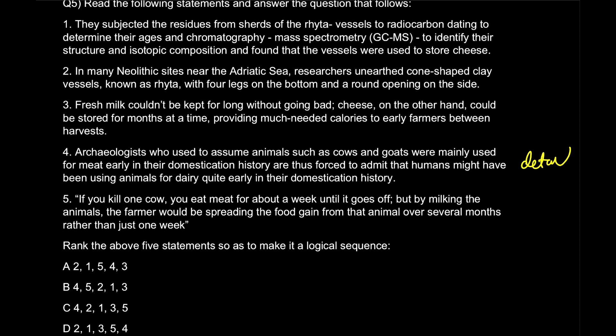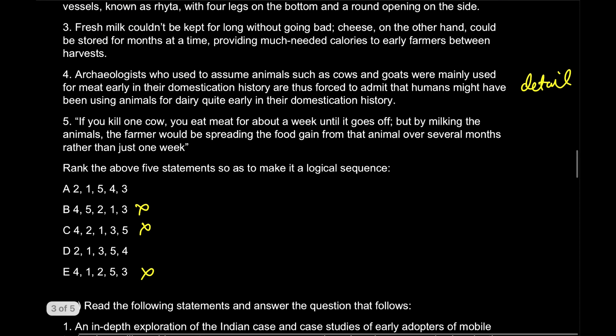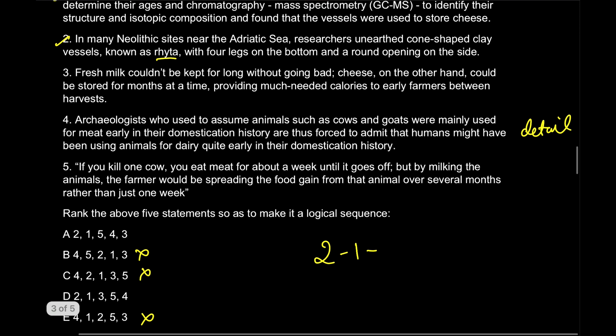Let's check the other option. 'Archaeologists who used to assume animals such as cows and goats were mainly used for meat' - again detail. Where you see detail, run away from it. It won't be in the opening. So we will eliminate option B, option C, and option E also. Now two one, two one is present in both the sentences. So does this create our problem or make it easy? It makes it easy. Always remember that in para jumbles, the more sequence you get in a built form, the easier it is for you to guess what will be next. So two number is neolithic sites, one number is talking about further the Riata which they are talking about over here. After that see the last part: 'to identify the structure and isotopic composition and found that the vessels were used to store cheese. Fresh milk could not be kept.' Why will I go to fresh milk? Because we're talking about cheese. So cheese is getting continued in number three, and this brings us to the answer of the question, which is D.